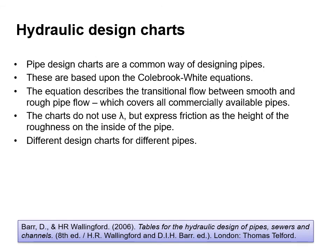Another way of designing pipes is using pipe design charts based on the Colebrook-White equations. The equation describes the transitional flow between smooth and rough pipes, covering all commercially available pipes. The charts don't use lambda but express friction as the height of roughness on the inside of the pipe, and there are different charts for different pipe types. There is a publication by HR Wallingford called Tables for the Hydraulic Design of Pipes, Sewers and Channels — we'll cover how to use these design charts in the tutorial questions.